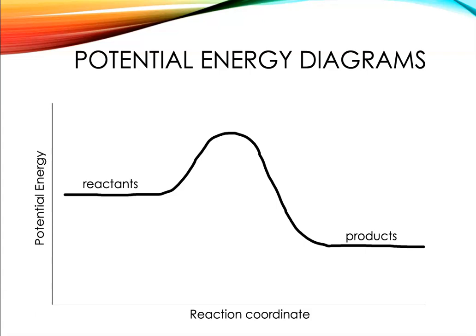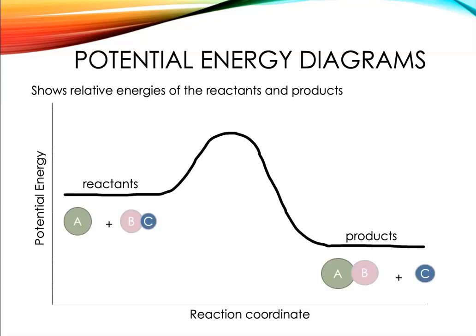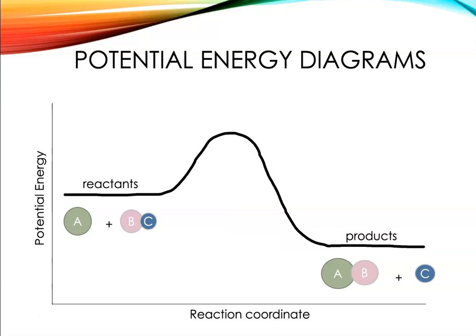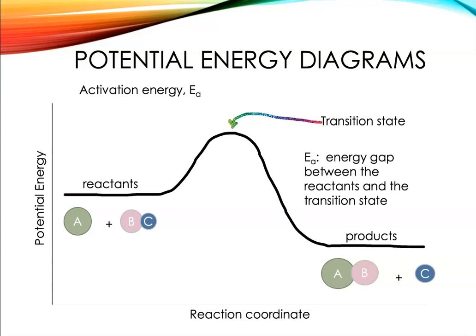This is a nice time to bring in potential energy diagrams. They're a really useful visual way of showing the energetics of a reaction — the relative energies of the reactants and the products. In this particular reaction, the reactants are higher in energy than the products, so this is an exothermic process. We can show the delta H value — the difference in energy between products and reactants — determined as products minus reactants. We can also show the activation energy, that minimum energy required for the reaction, using an arrow labeled EA between the reactants and the peak of the curve, which we call the transition state.